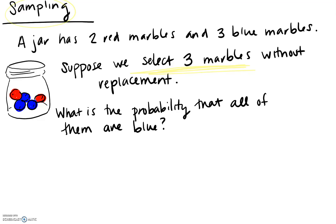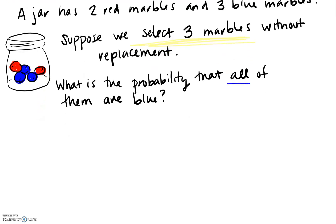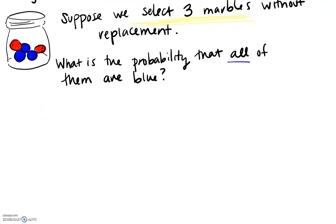Once we take a marble out of the jar, it is gone — it's out of the jar. We're asked to find a particular probability, in this case the probability that all three of these marbles are blue. This is where we could make something like our tree diagrams. Basically we have three separate events that need to happen: we have to pull one marble, we have to pull a second marble, and then we've got to pull a third marble.